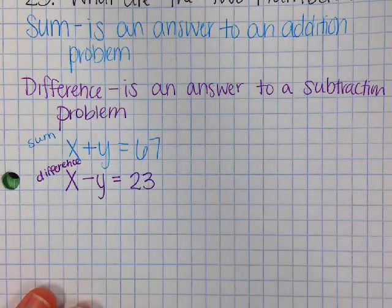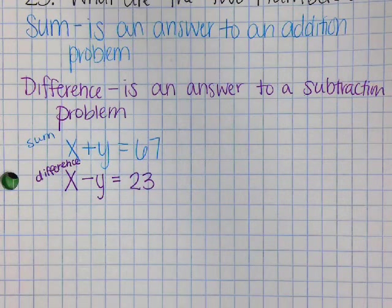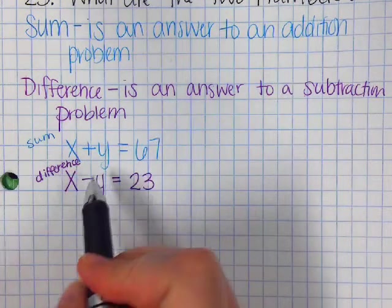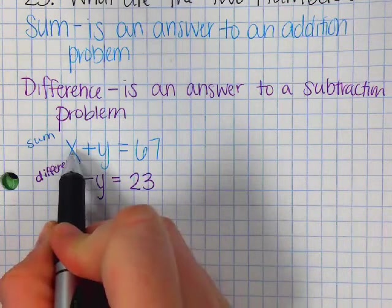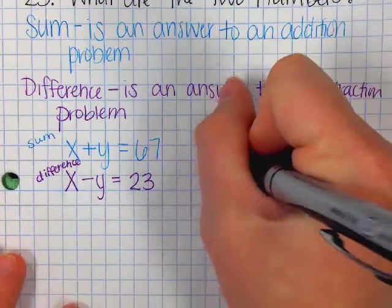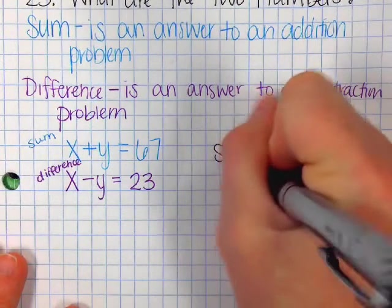Then you're going to just solve the system however you want. You can do substitution, you can just do elimination. In my opinion right now, it's easier to just do elimination, because we have y minus y, so those are going to automatically cancel. So then we're going to solve the system.